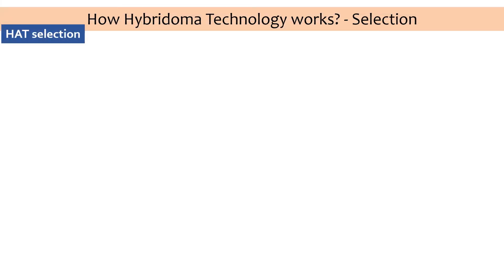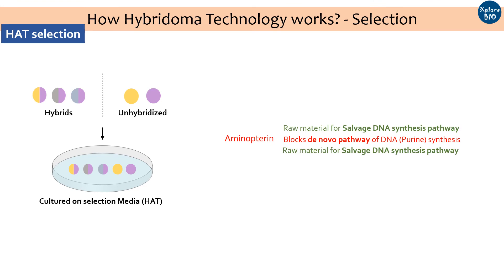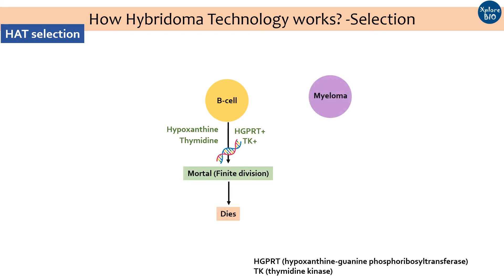The process of selecting hybrids is quite easy to understand. All the cells are grown on a special selection media known as HAT medium — hypoxanthine aminopterin thymidine medium. It contains aminopterin, a drug that blocks the de novo pathway of DNA synthesis, which is essential for a cell to divide. The only remaining option is the salvage pathway, using hypoxanthine and thymidine as precursors, provided the cell has the required enzymes. The B cells have both salvage pathway enzymes — HGPRT and TK — and will grow, but only for limited divisions before dying off. Myeloma cells are TK or HGPRT mutants that cannot produce DNA precursors via the salvage pathway and will not survive on HAT medium.